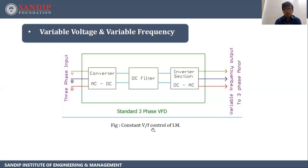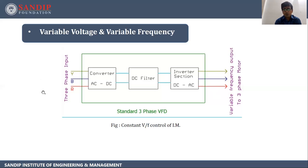To achieve V by F constant, we have to vary both V and F. Let's see this block diagram. It consists of a converter that converts AC into DC. The input is three-phase constant voltage, constant frequency supply, which is fed to the AC to DC converter and gets converted into DC. This DC is passed to a DC filter so ripples are removed, and later it is passed to the inverter section. The inverter section converts this DC into AC of variable frequency and variable voltage. As the output is variable frequency and variable voltage, the V by F ratio remains constant. Therefore this is called variable voltage, variable frequency (V/F) control of induction motor.